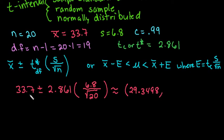Then to get the upper, we would go back in and type in 33.7 plus 2.861 times 6.8 divided by the square root of 20. If you put it in exactly how it's written, you do have to separate it into the plus and minus. So if this is confusing to you, just write it out like this, and that way you know what you have to plug into your calculator. Either way, you end up with the same thing. I got 38.0502.